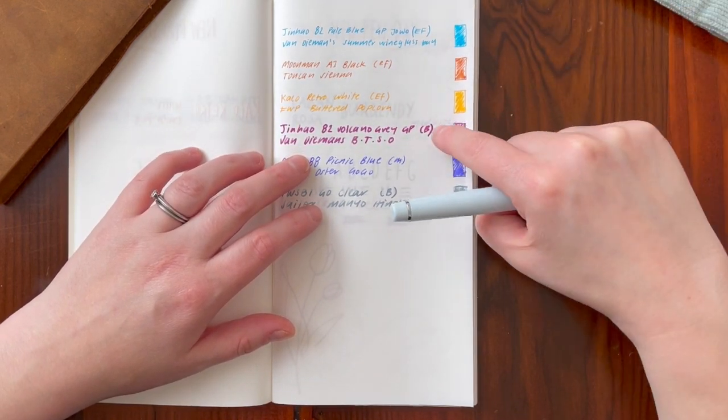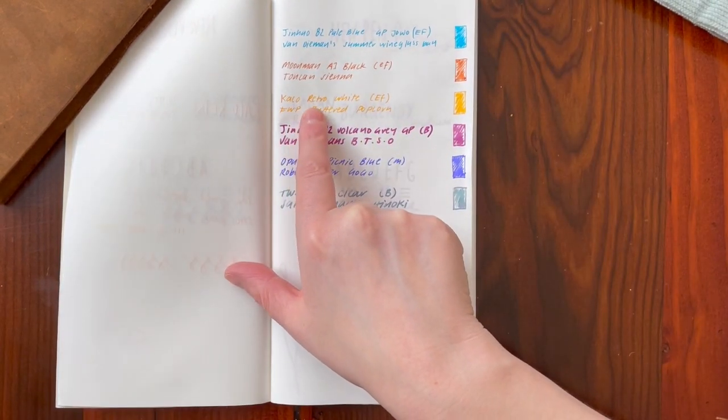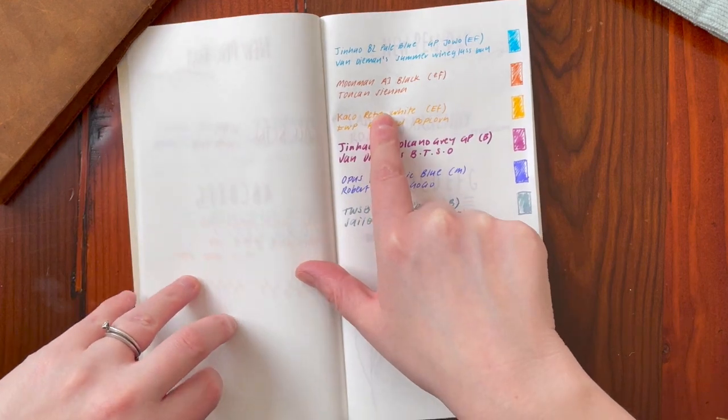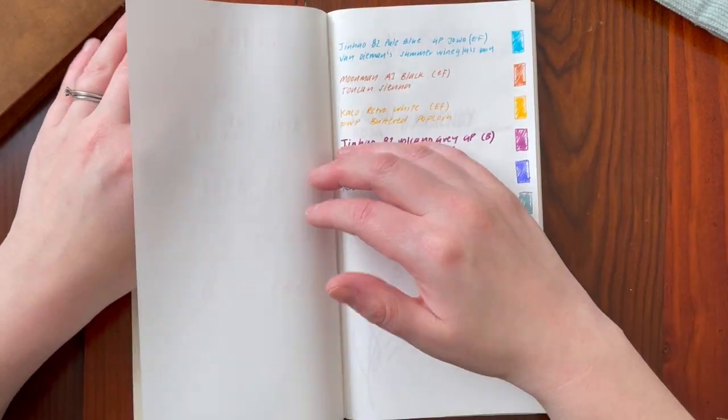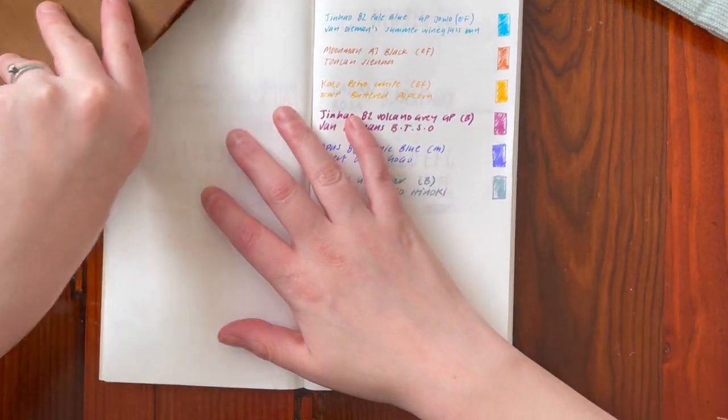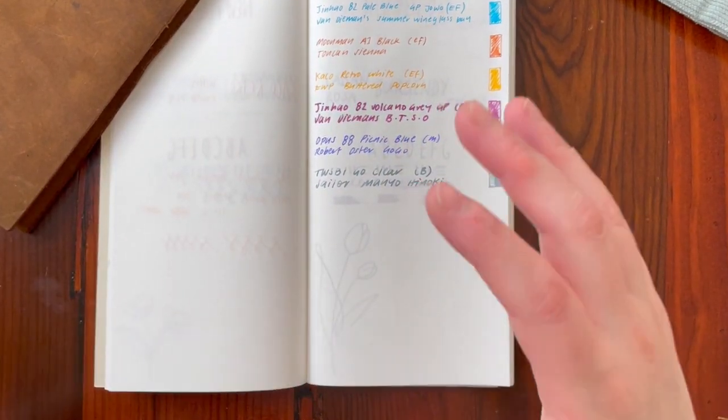Interestingly, I preferred this broad nib to the Twsbi one. I had bought one of the Kakuno retractable, and I actually filmed a video and then the pen just broke. It was a cheap pen, so I actually don't have that. I chucked it out. It wasn't repairable.